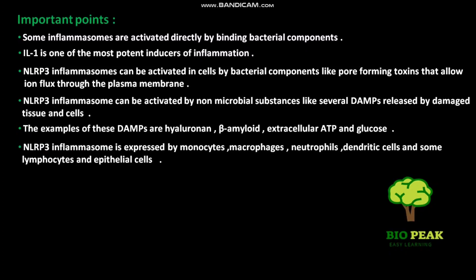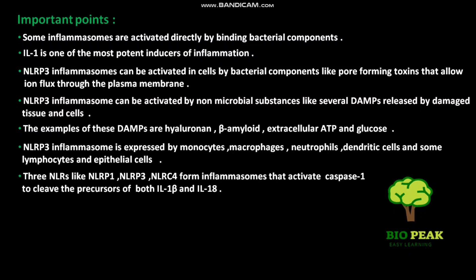NLRP3 inflammasome is expressed by monocytes, macrophages, neutrophils, dendritic cells, and some lymphocytes and epithelial cells. Three NLRs — NLRP1, NLRP3, and NLRC4 — form inflammasomes that activate caspase-1 to cleave the precursors of both IL-1β and IL-18.